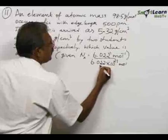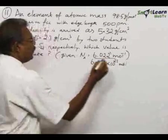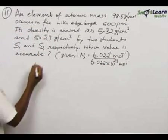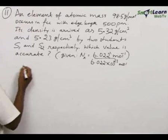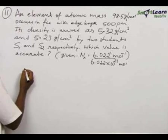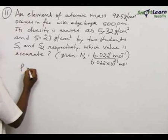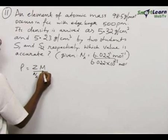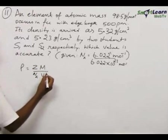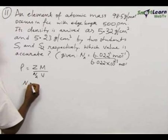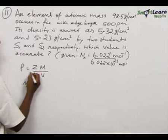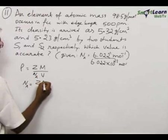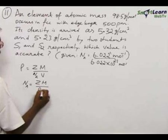You interpret this as 6.022 × 10²³ mole per mole. First we calculate the density according to student number 1. Density is given by the formula Z·M divided by Na times V. Therefore, Na equals Z·M divided by ρ times V.